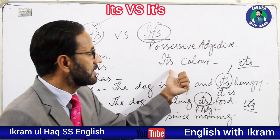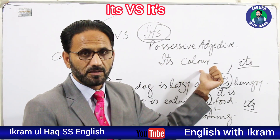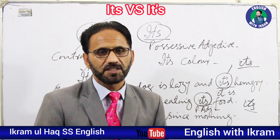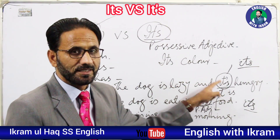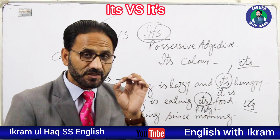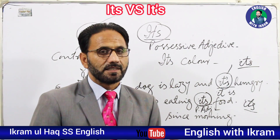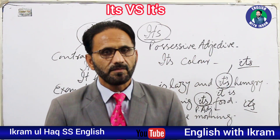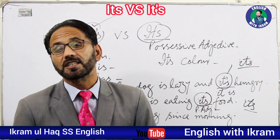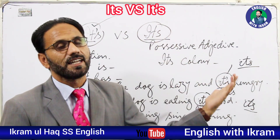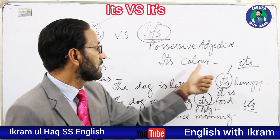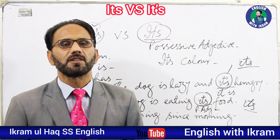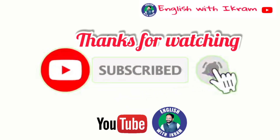This is the possessive adjective — the word is qualifying a noun, just like 'his color' or 'his book.' But when we put an apostrophe, we use it as the contracted form of 'it is' or 'it has.' I hope now the difference between both structures is clear. There are many students who are confused — sometimes putting an apostrophe when using it as a possessive adjective and vice versa. Now the difference should be clear to you. That's all for today, thank you very much.